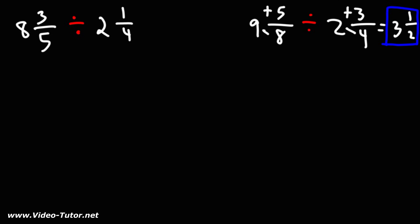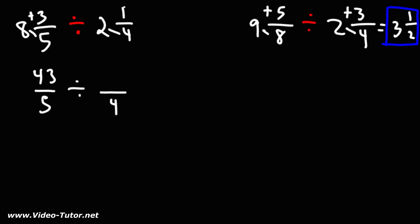Now let's go back to the first example. Let's convert each mixed number into an improper fraction. If you want to try this problem, feel free to pause the video. So we're going to rewrite the denominator, 5. Next, we have 8 times 5, which is 40, plus 3 — that's 43. For the second mixed number, we're going to rewrite the denominator, 4. 2 times 4 is 8, plus 1, that's 9. So we have 43 over 5 divided by 9 over 4.